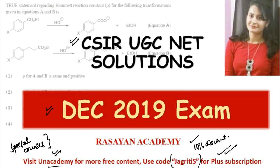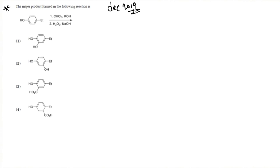Let's begin with the first question from the CSIR NET exam December 2019. The question asks for the major product formed in the following reaction. Looking at the reagents: chloroform in the presence of a base is used in the first step, and in the second step it is hydrogen peroxide in the presence of a base — sodium hydroxide.